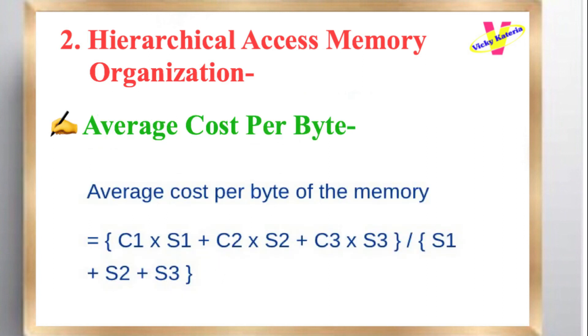Average cost per byte: Average cost per byte of the memory equals (C1 × S1 + C2 × S2 + C3 × S3) / (S1 + S2 + S3).